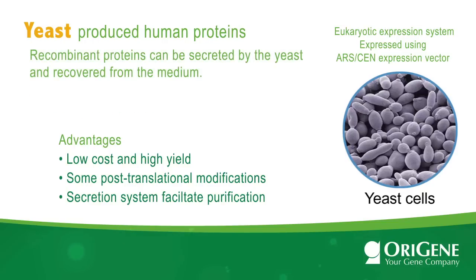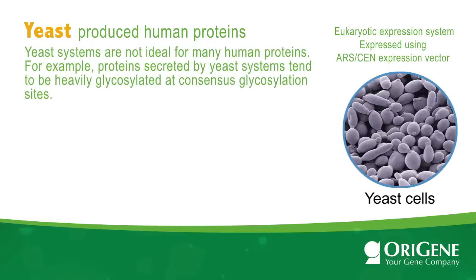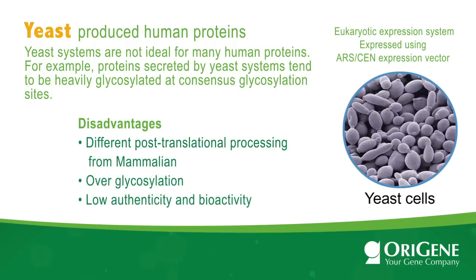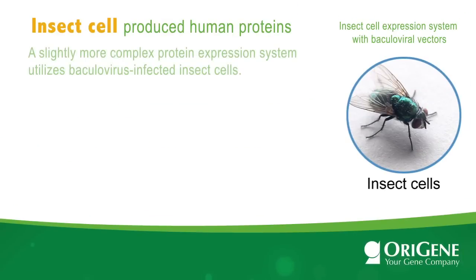Recombinant proteins can be secreted by yeast and recovered from the medium. Nevertheless, yeast systems are not ideal for many human proteins. For example, proteins secreted by yeast systems tend to be heavily glycosylated at consensus glycosylation sites. Thus, expression of recombinant proteins in yeast systems has historically been confined to proteins where glycosylation patterns do not affect function.